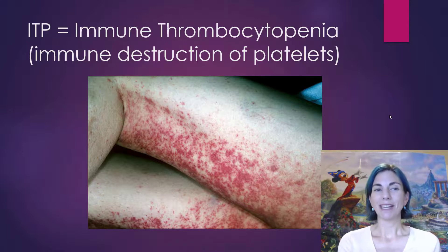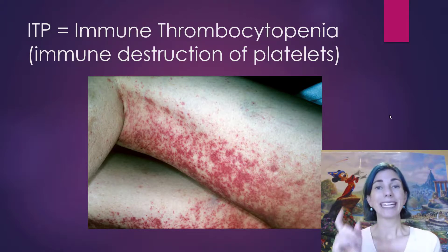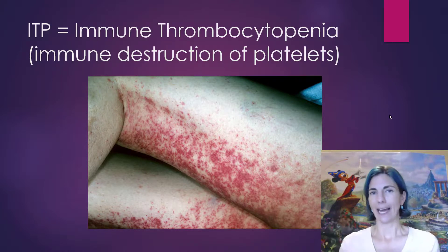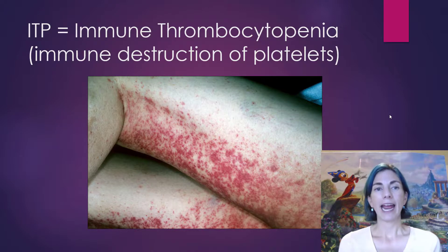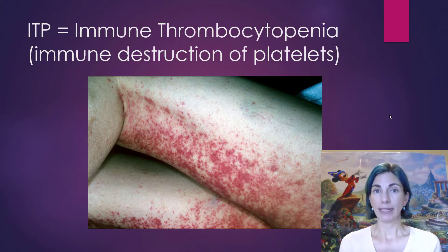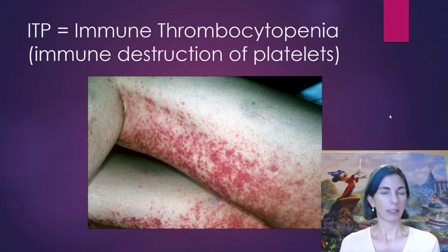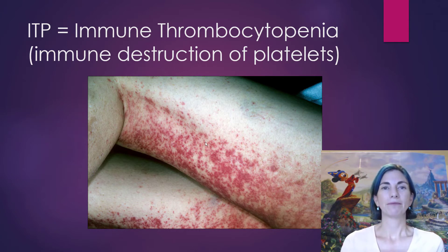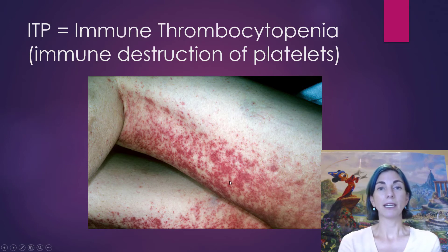Another disorder is ITP — immunothrombocytopenia. 'Cyto' means cell, 'thrombo' means clot, and 'penia' means too little — so too few clotting cells, meaning too few platelets. This is where the immune system starts destroying its own platelets. It can be transient, coming and going, or chronic. Without enough platelets, you can't form the platelet plug to create a clot. This immune destruction of platelets can result in a petechiae rash. That concludes our survey of some disorders related to blood.